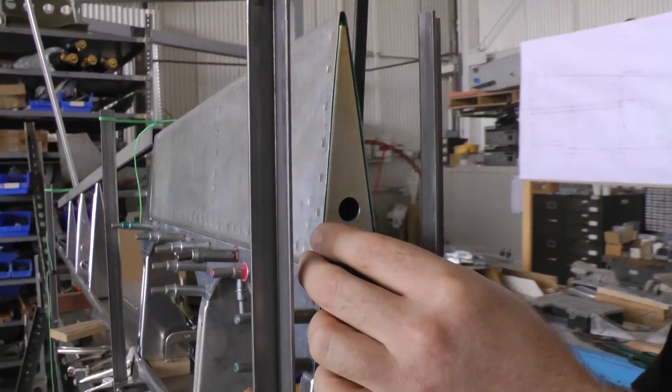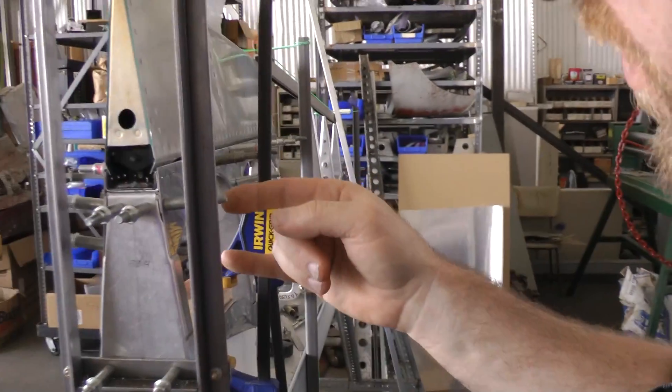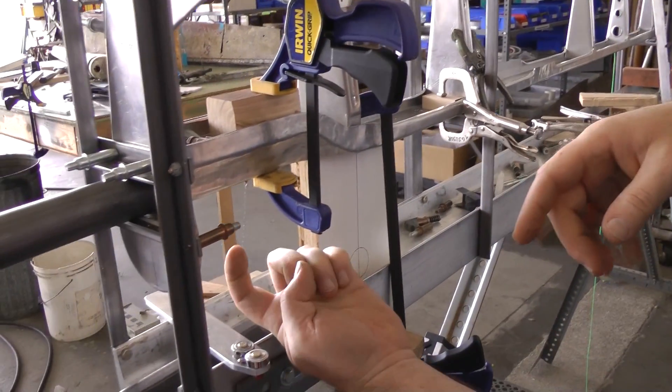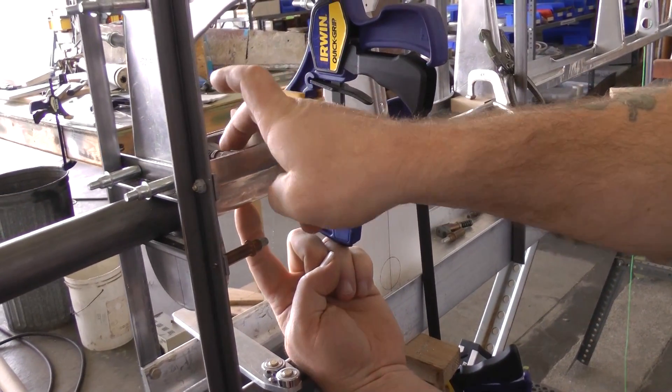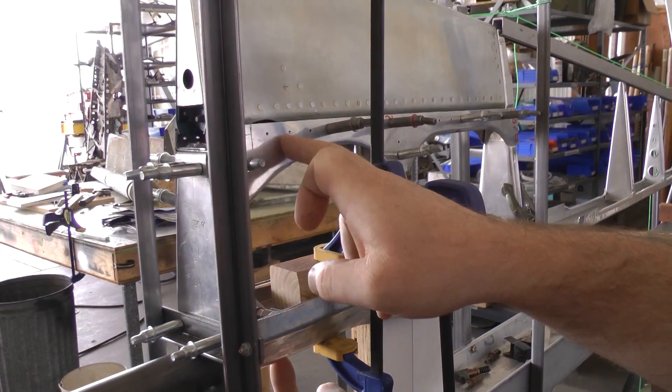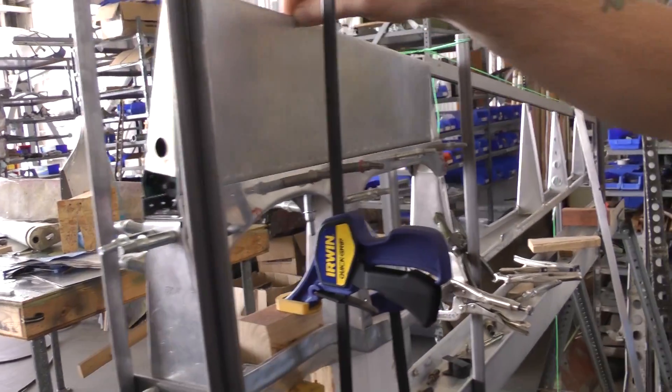The trim system that we discussed in an earlier video hasn't been set up yet. That comes out of the stabilizer and sends a rod straight through here and it comes up there and goes through a hole in this false spar here, this rear spar. We discussed that in an earlier video.